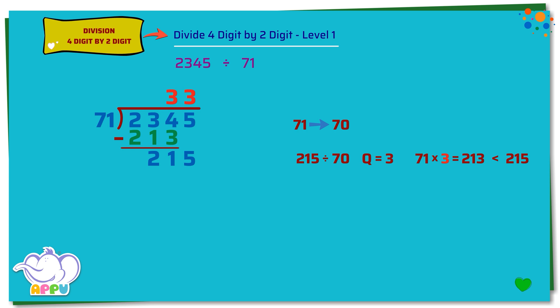We multiply 71 and 3, we get 213. We subtract 213 from 215, we get 2. We stop division because 2 is less than 71. So 33 is the quotient and 2 is the remainder.